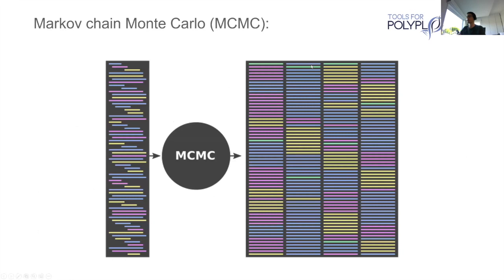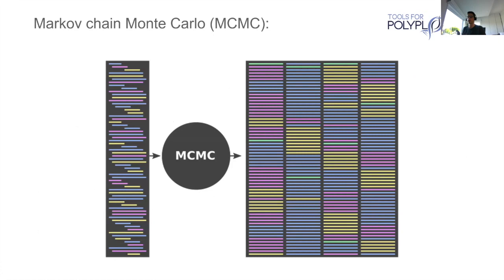Looking at the diagram on the right-hand side, each line indicates a genotype. This is showing a tetraploid individual — you can see four haplotypes per step in the chain. The most frequent genotype within that chain is called as the genotype call in the output VCF file. That's a very brief flyby introduction to MCHAP.